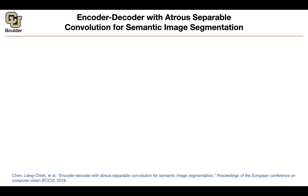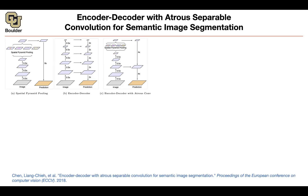Let's move to the next one because I want to finish the segmentation today and then move on to the next topic in the next session. We saw an encoder-decoder architecture when we were doing UNET, and those were doing very good. We saw spatial pyramid pooling when we were considering DeepLab. The idea of this paper, DeepLab version 3+, is that you're going to use both — spatial pyramid pooling and encoder-decoder architecture.